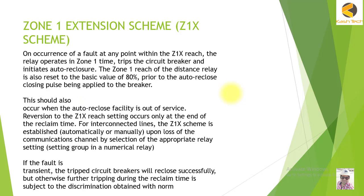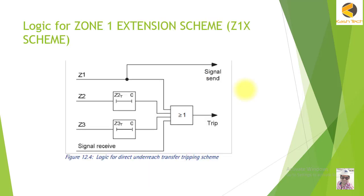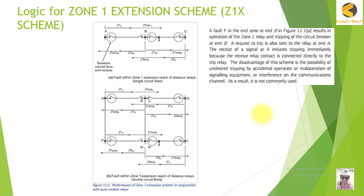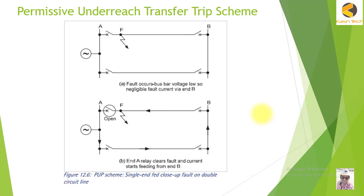After Zone 1 is extended, it is blocked again after a certain time. We will examine the different situations where this scheme is selected. We will also look at the logic in detail. Then we will understand the Permissive Underreach Transfer Trip (PUTT) scheme — this is the scheme I have seen most used in protection systems throughout my 17-year career. I will explain where to choose PUTT and where to choose Permissive Overreach Transfer Trip (POTT).